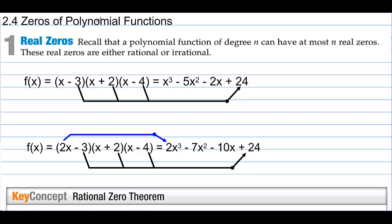Section 2: zeros of polynomial functions. Recall that a polynomial function of degree n can have at most n real zeros. These real zeros are either rational or irrational.